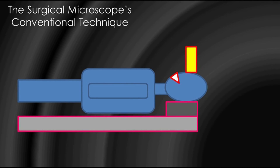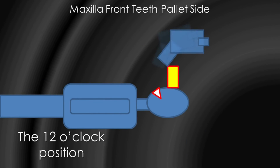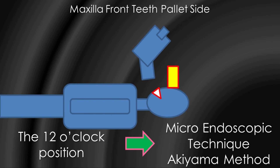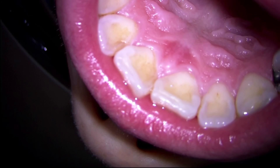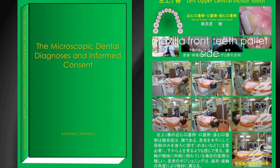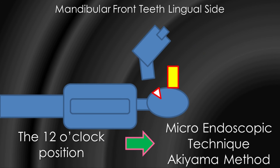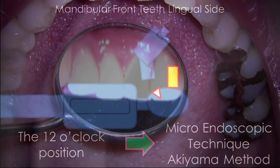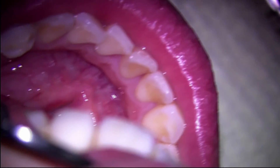I will demonstrate the surgical microscope's conventional technique and then the micro-endoscopic technique. I will demonstrate from the conventional technique to the micro-endoscopic technique: maxilla frontis, parrot side. This is the conventional mirror technique. I will overcome the new obstacle between the operator and the patient — this is the micro-endoscopic technique position. Next, the 12 o'clock conventional technique to micro-endoscopic technique: mandibular frontis, wringer side. This is the conventional technique; I will overcome the new obstacle. This is the micro-endoscopic technique Akiyama method positioning.